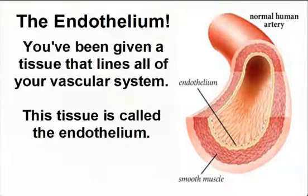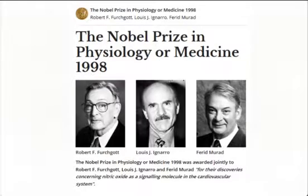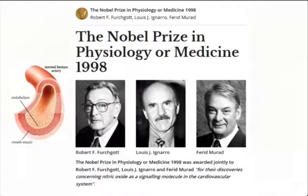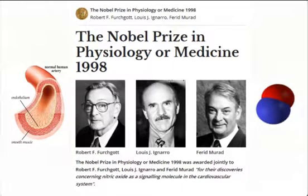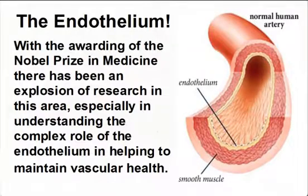You've been given a tissue that lines all of your vascular system. This tissue is called the endothelium. The 1998 Nobel Prize in Medicine was awarded to three American researchers for discovering how the endothelium converts the amino acid L-arginine into nitric oxide, and how nitric oxide is the master signaling molecule of your entire cardiovascular system. With the awarding of the Nobel Prize in Medicine, there has been an explosion of research in this area, especially in understanding the complex role of the endothelium in helping to maintain vascular health.